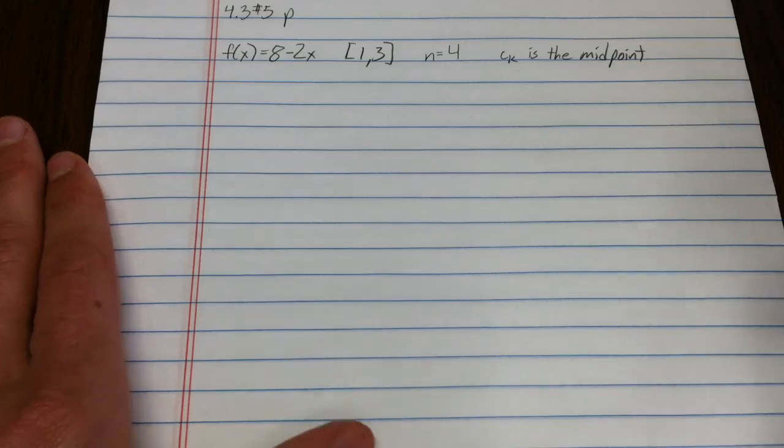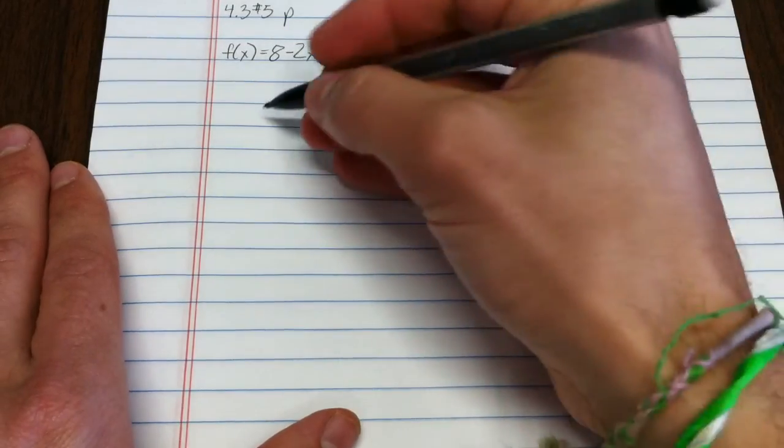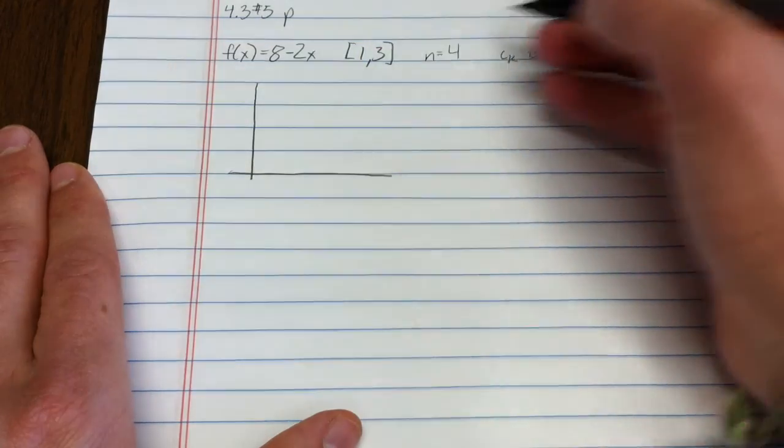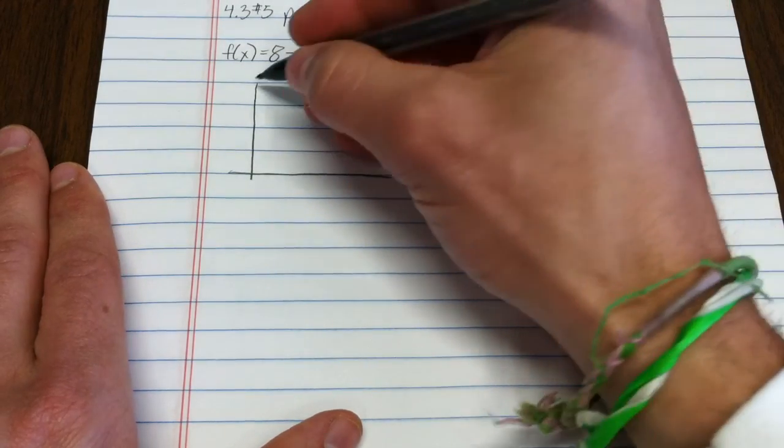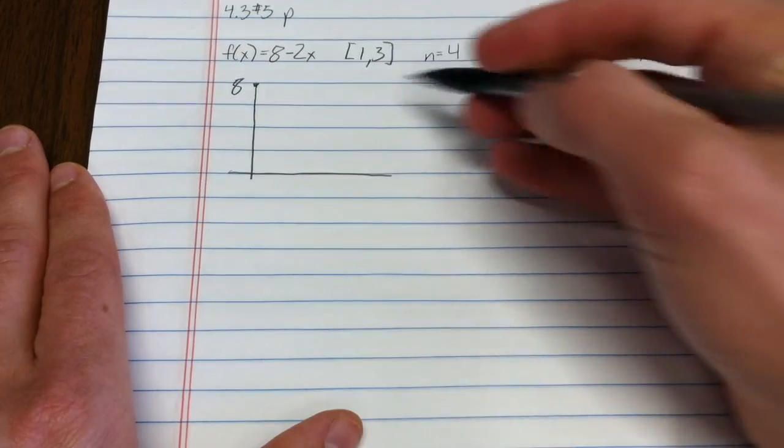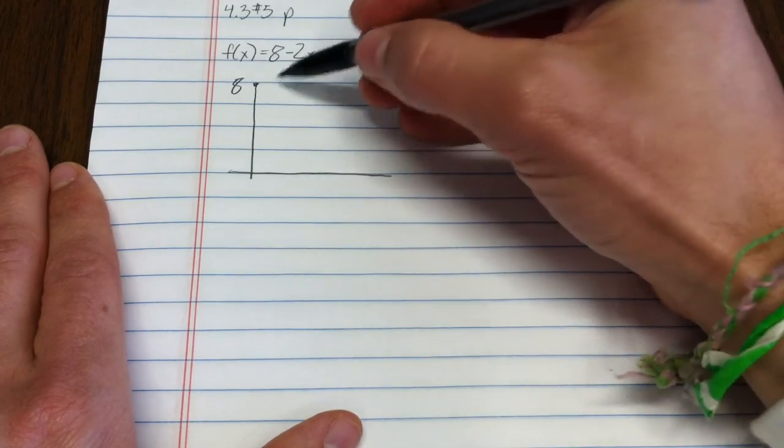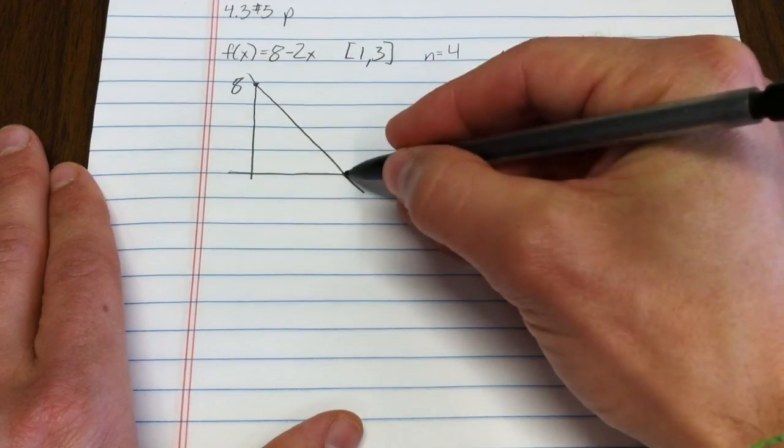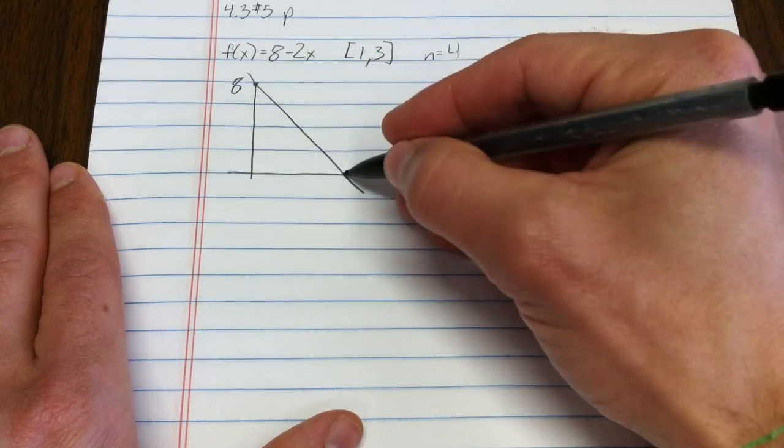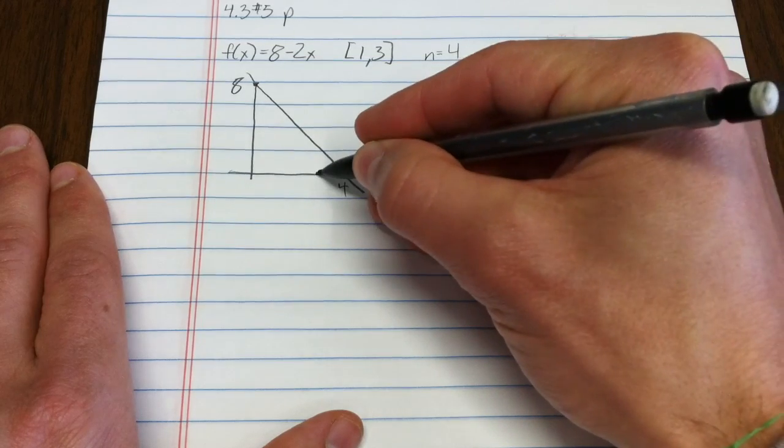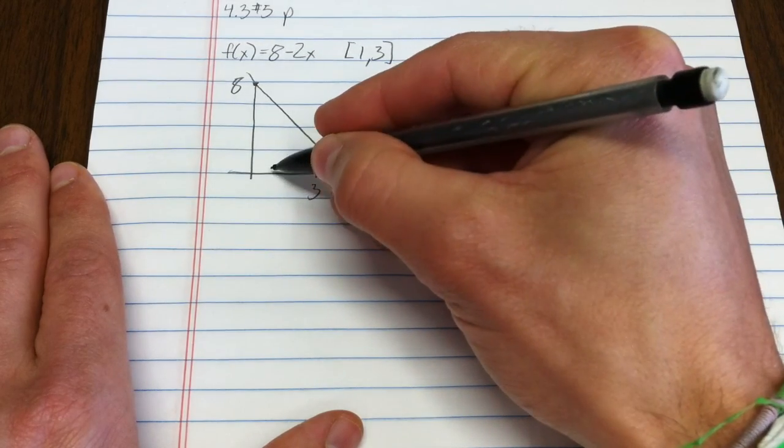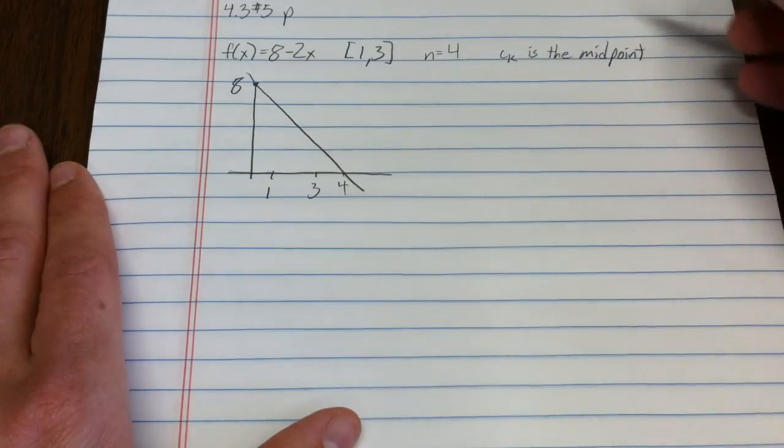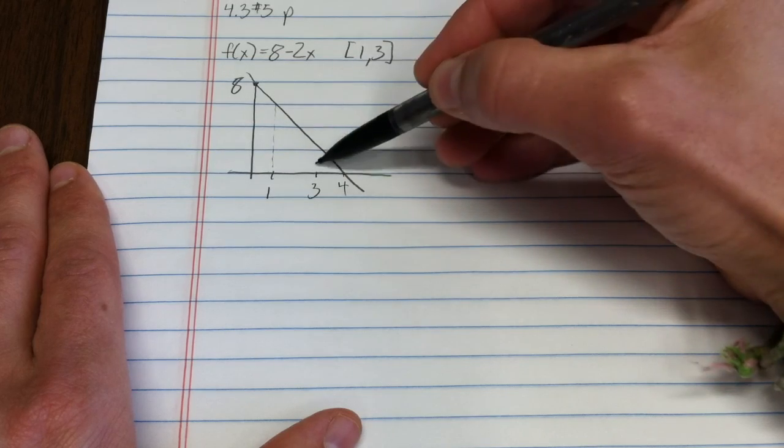Here we go. This is my function. This function should be graphed fairly easily. The y-intercept is 8. Let's pretend like that's 8. The slope is negative 2, so it's going down like that fairly quickly. I guess it's going to cross at 4. And we're evaluating from 1 to 3. So we're trying to get that area.